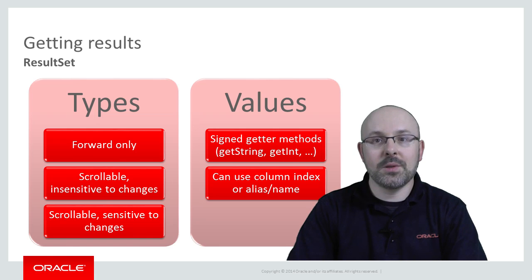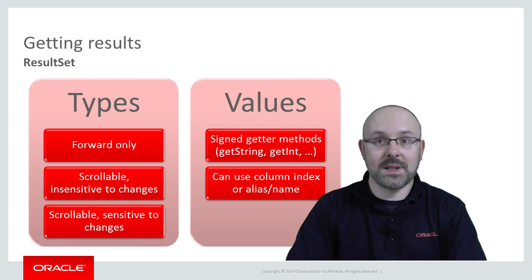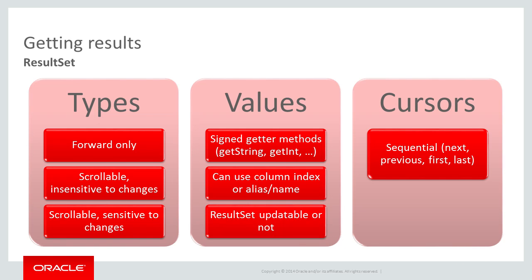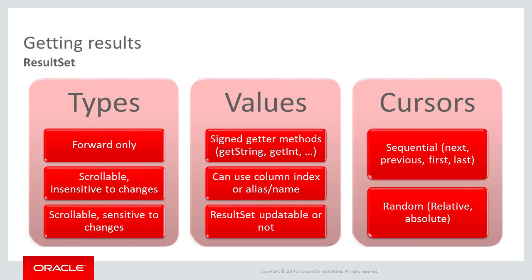Before showing a code sample, I must introduce you to result set cursors. Result set cursors mark the current row in a result set — they are not related to database-side cursors. With them, you can navigate result sets sequentially with methods such as next, previous, first, and last. In addition, beforeFirst and afterLast make it easier to insert new records at the beginning or end of the set. Result sets also allow random access: the relative method moves the cursor by the number of rows specified, with a negative number moving it backwards. The absolute method moves the cursor to the given row number, if it exists.